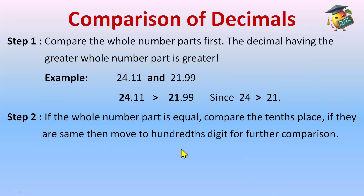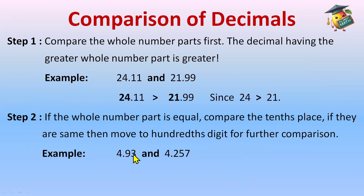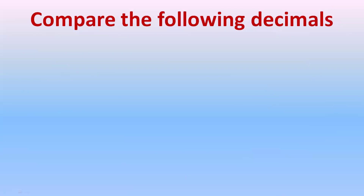Step two: if the whole parts are equal, compare the tenth place, then move to the hundredths place for further comparison. For example, 4.93 versus 4.257 — the whole part is the same, so check the tenth place: nine versus two — nine is greater, so 4.93 is greater than 4.257. Even though 4.257 looks longer, 4.93 is greater because the tenth digit is larger.